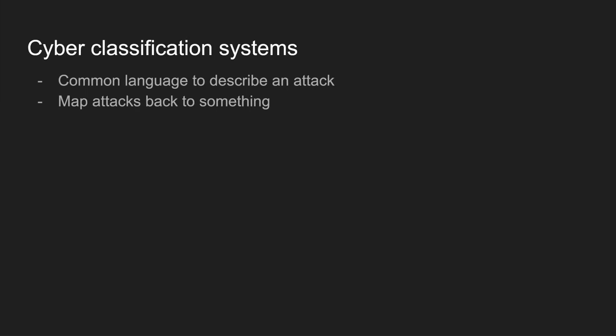A cyber classification system offers key benefits from a CTI — cyber threat intelligence — perspective. First, it provides a common language to describe an attack, mapping adversary behaviors, tools, and processes to a shared framework like MITRE ATT&CK or the cyber kill chain. It also maps attacks back to something concrete, so that because an attack can be so varied and creative, you can loop behavior back into that common language.